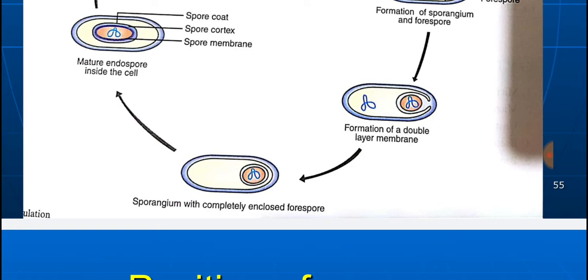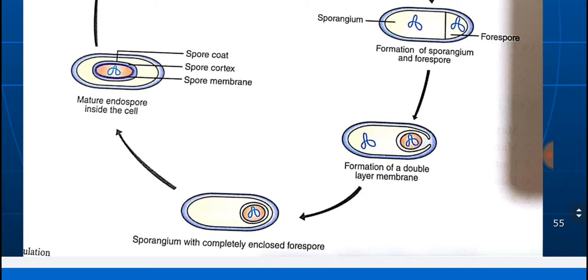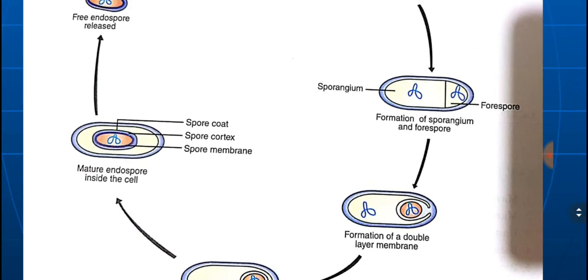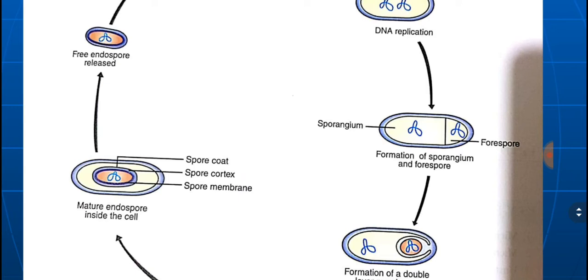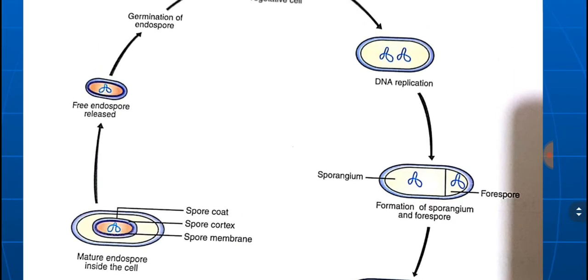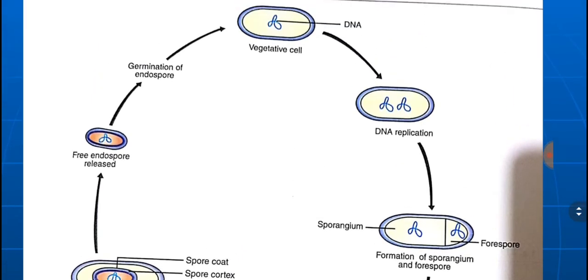The cortex is the region between the two layers. The endospore matures inside the cell, and when conditions are conducive, the free endospore is released. Germination of the endospore then occurs, and it changes back to a vegetative cell.